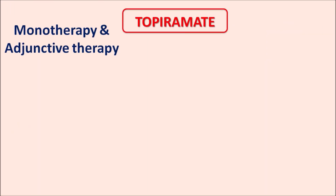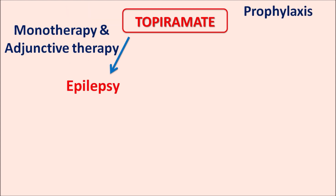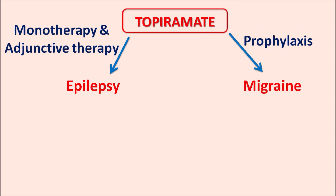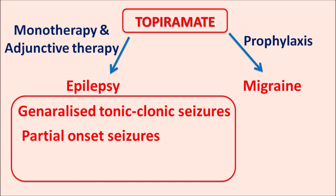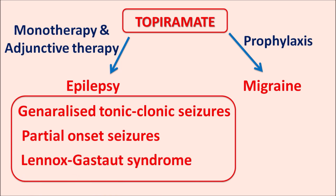Topiramate can be used as monotherapy as well as adjunctive therapy. It can be combined with other drugs like valproic acid in the treatment of epilepsy. Similarly, it can be used as a prophylactic in the treatment of migraine, particularly in adults only. This drug can be used in the treatment of generalized tonic-clonic seizures, partial onset seizures, and even Lennox-Gastaut syndrome, which is produced by excessive stimulation of NMDA receptors. This drug can be used in both adults as well as pediatric patients, but when used in children, the age should be greater than two years.